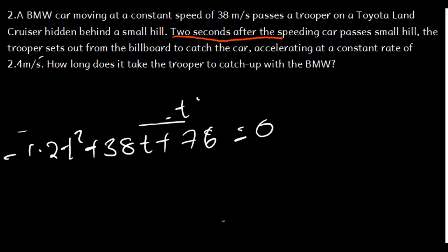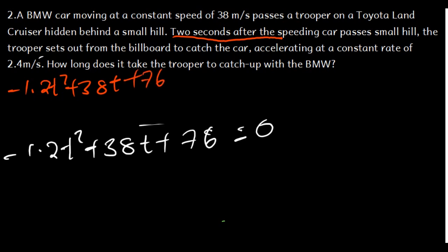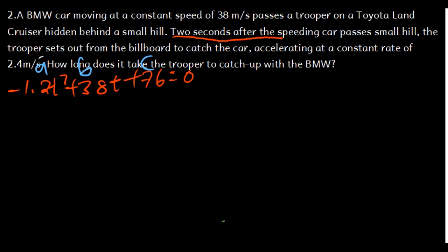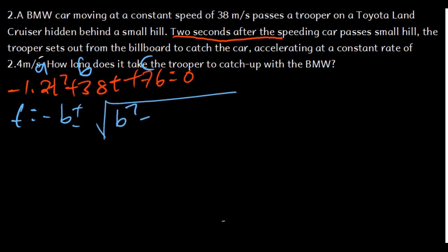We need to solve for T using the quadratic formula. The equation is −1.2T² + 38T + 76 = 0, so A = −1.2, B = 38, C = 76. The quadratic formula is T = [−B ± √(B² − 4AC)] / (2A).